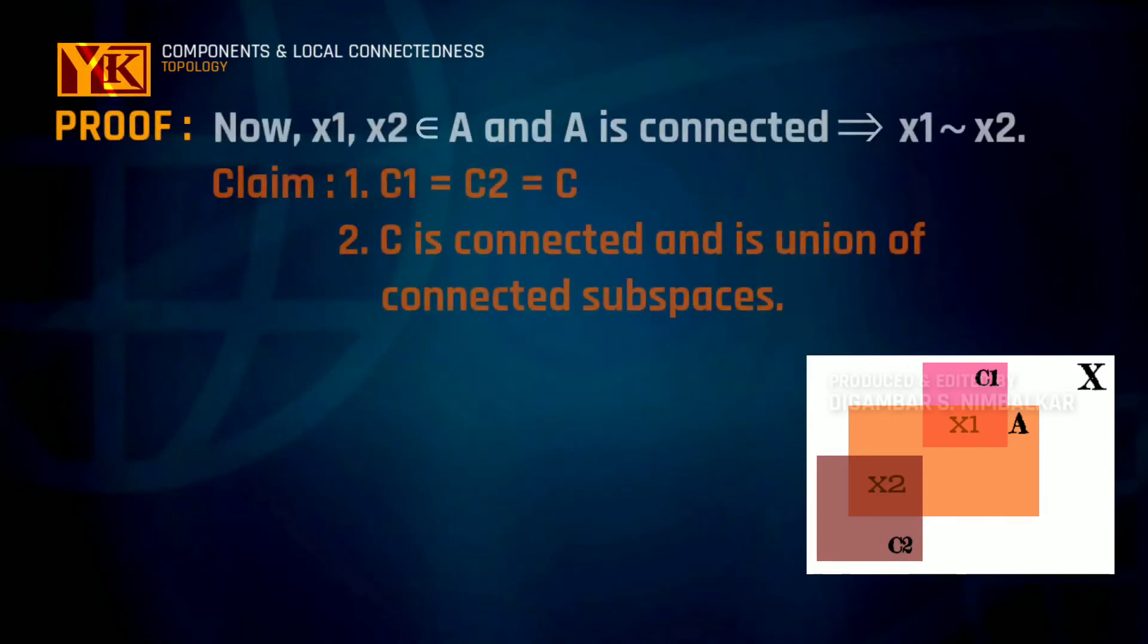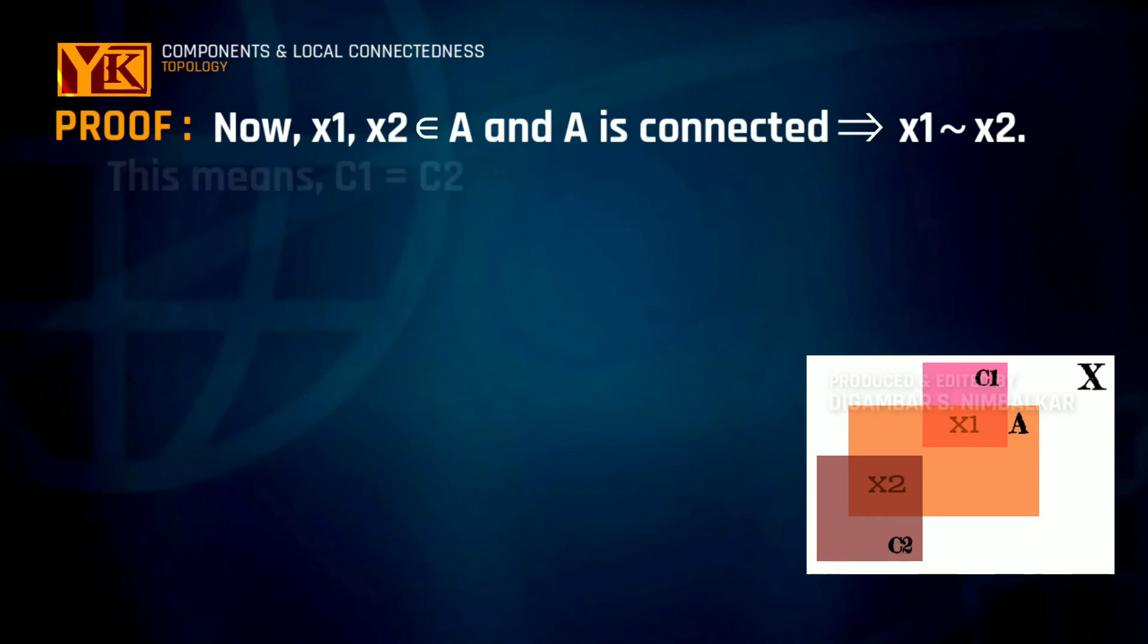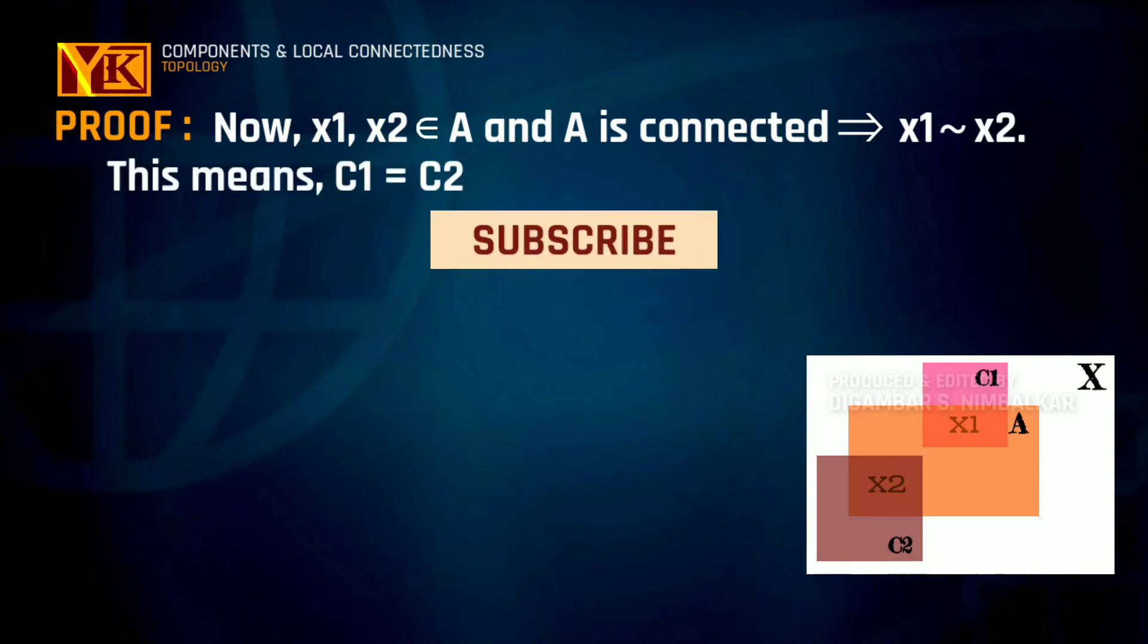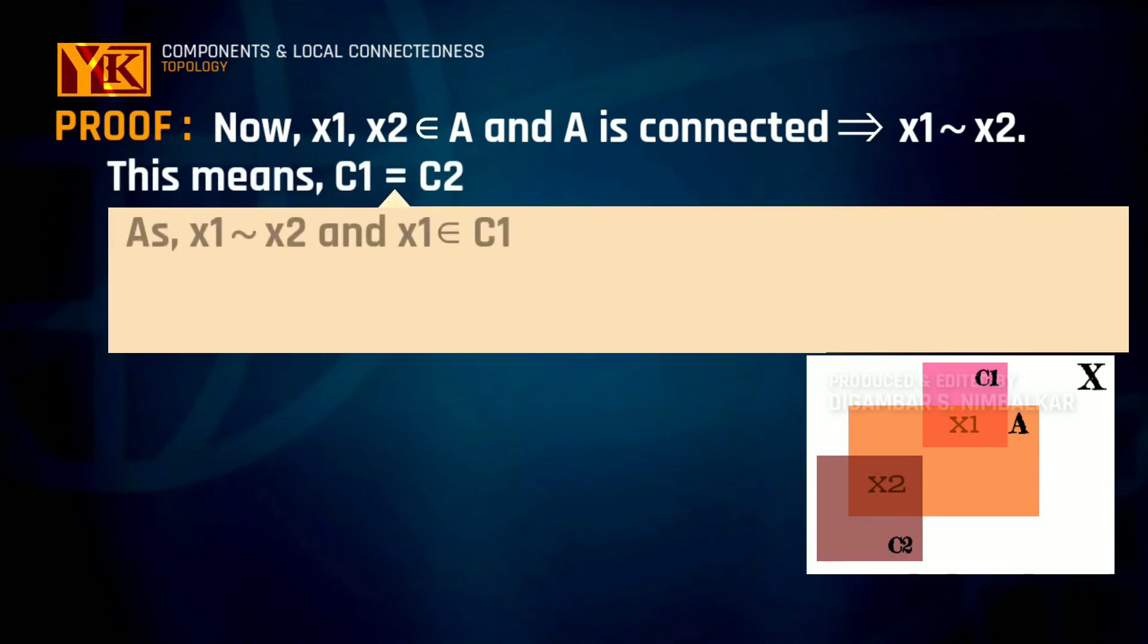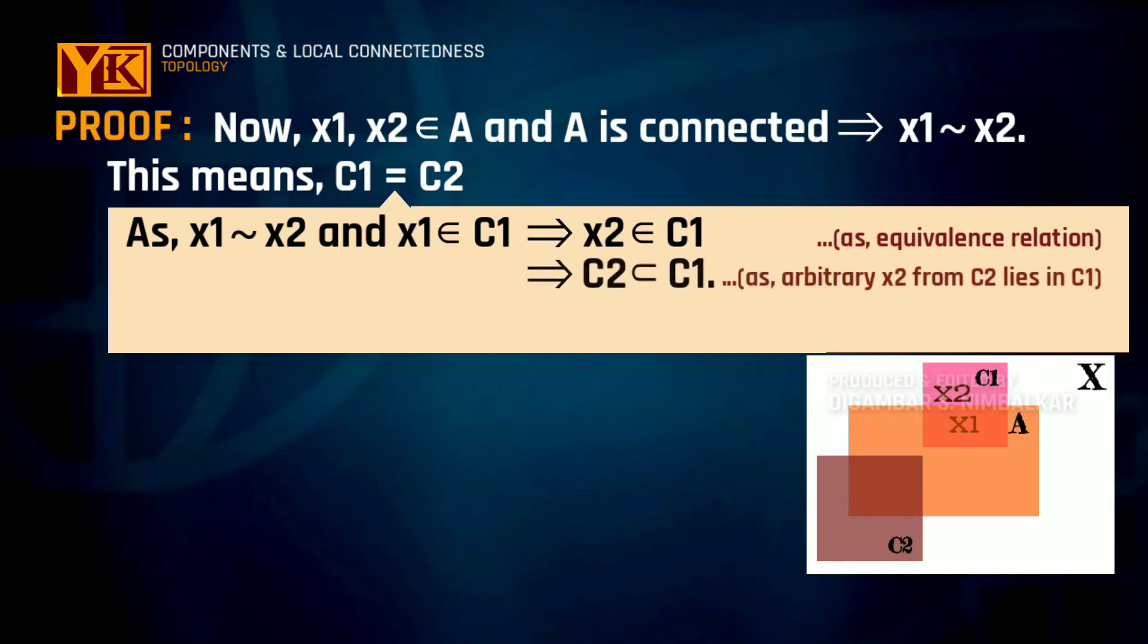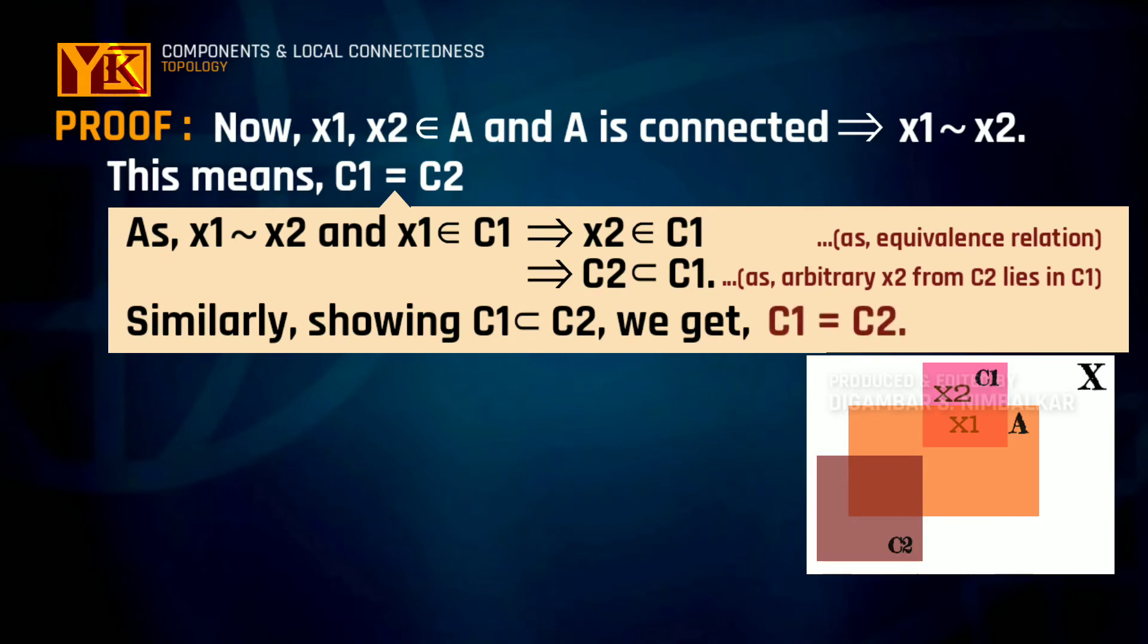Now, as x1 and x2 belong to A and A is connected, x1 will be equivalent to x2 by the definition of equivalence relation. This means c1 is equal to c2. Since x1 is equivalent to x2 and x1 lies in c1, x2 has to be in c1. What does this mean? c2 lies in c1 and similarly we can show that c1 also lies inside c2 and thus c1 should be equal to c2.